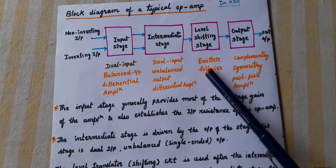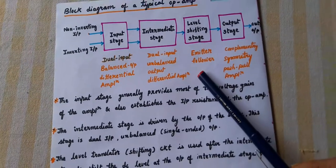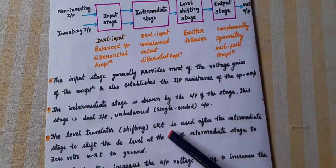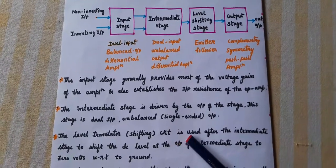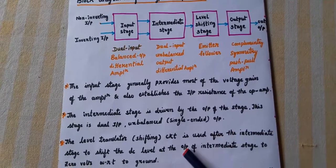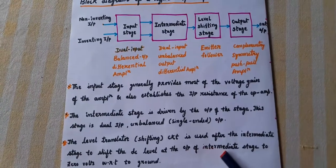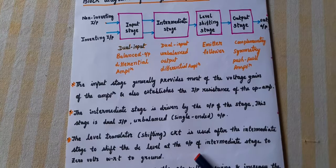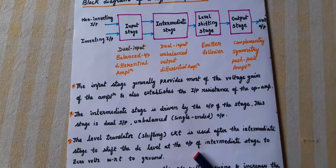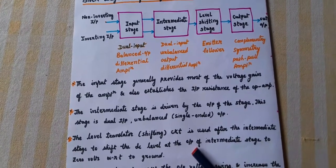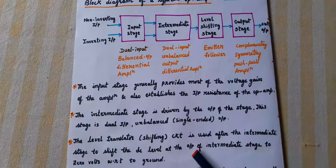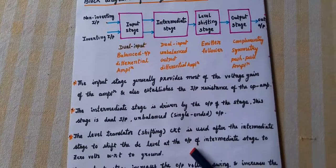The emitter follower is the level shifting stage, also called the level translator circuit. The level translator circuit is used after the intermediate stage to shift the DC level at the output of the intermediate stage to 0 volts with respect to ground.